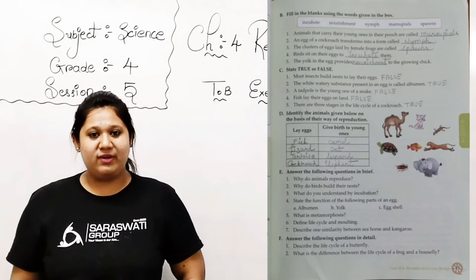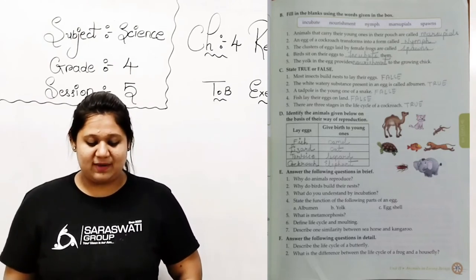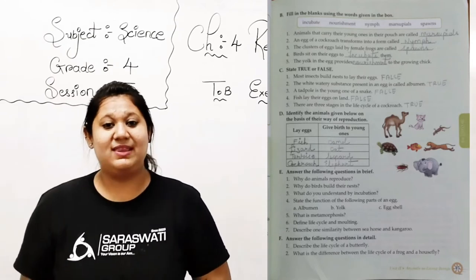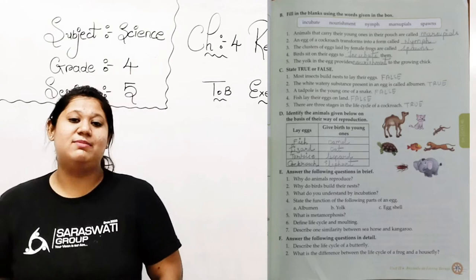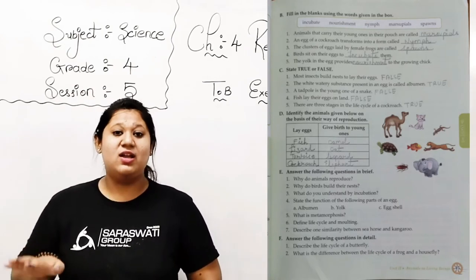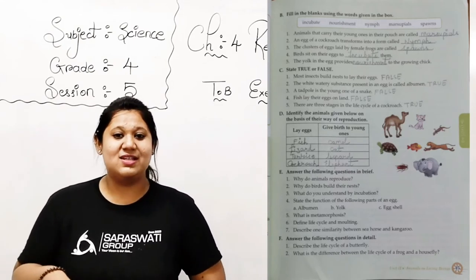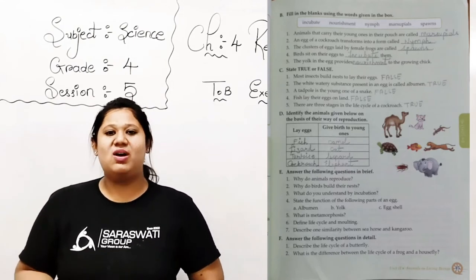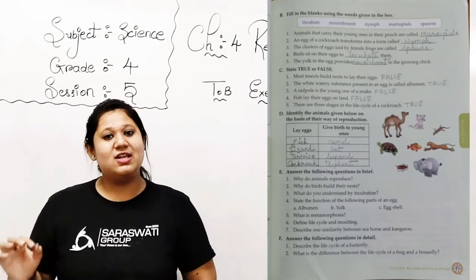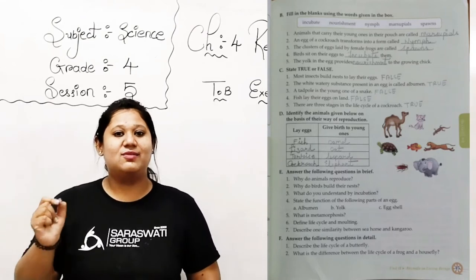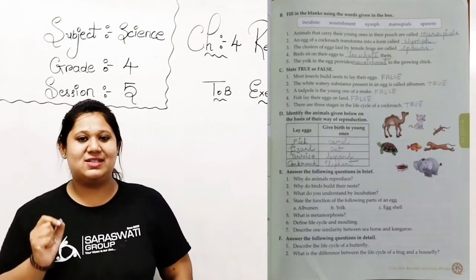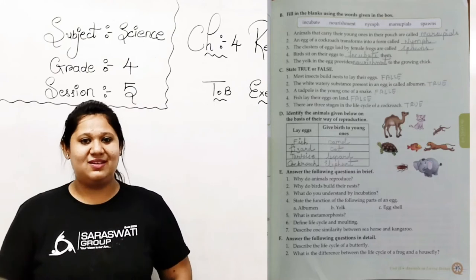Now number 4: birds sit on their eggs to blank them. There is one process when any female lays eggs. After that, they sit on that egg to give some warmness to that egg. So that process is called what? That process is called incubation, right? So here incubate is given. So you need to fill that blank with incubate. I-N-C-U-B-A-T-E. Incubate. That process is called incubation. Clear?